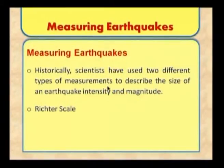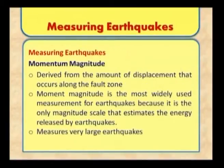Scientists measure the earthquake using scales of intensity and magnitude. One scale is called the Richter scale, named after the scientist Richter who proposed magnitude and intensity scales. Based on the magnitude, he calculated how much damage or destruction would occur and modified the scales. This is now called the modified Richter scale. Magnitude is derived from the amount of displacement that occurs along the fault zone and is the most widely used measurement for earthquakes because it is the only scale that estimates the energy released by the earthquake.